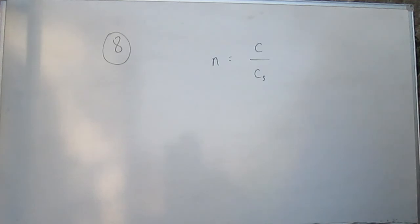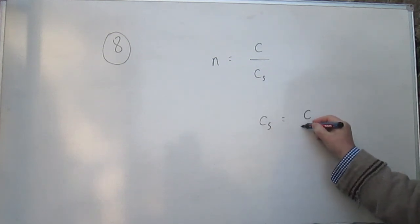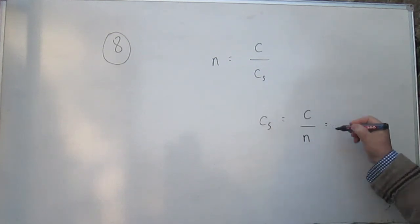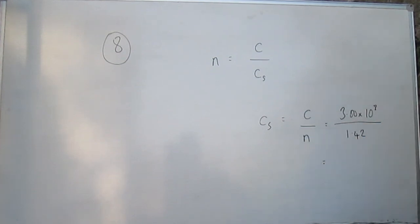And in question 8, we're using this again. That's the definition of the refractive index. It wants us to find the speed of light in glass of refractive index 1.42. So we just rearrange that to get Cs is equal to C over n. And just plug the numbers in. So 3.00 times 10 to the 8th, speed of light, divided by 1.42. So here's the refractive index, comes to 2.11 times 10 to the 8th metres per second, is the answer, which is B.